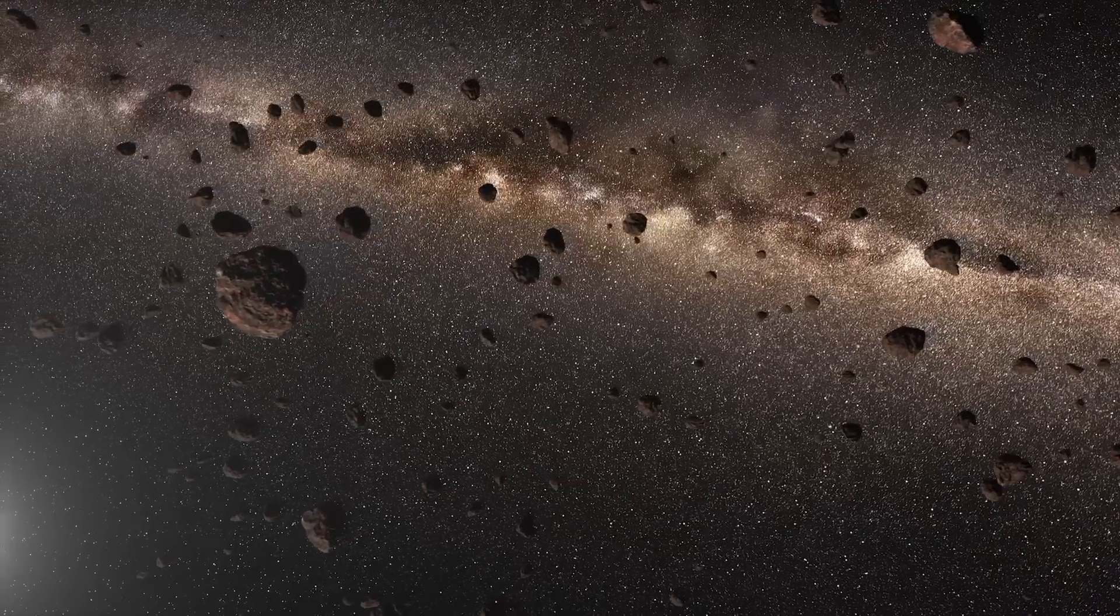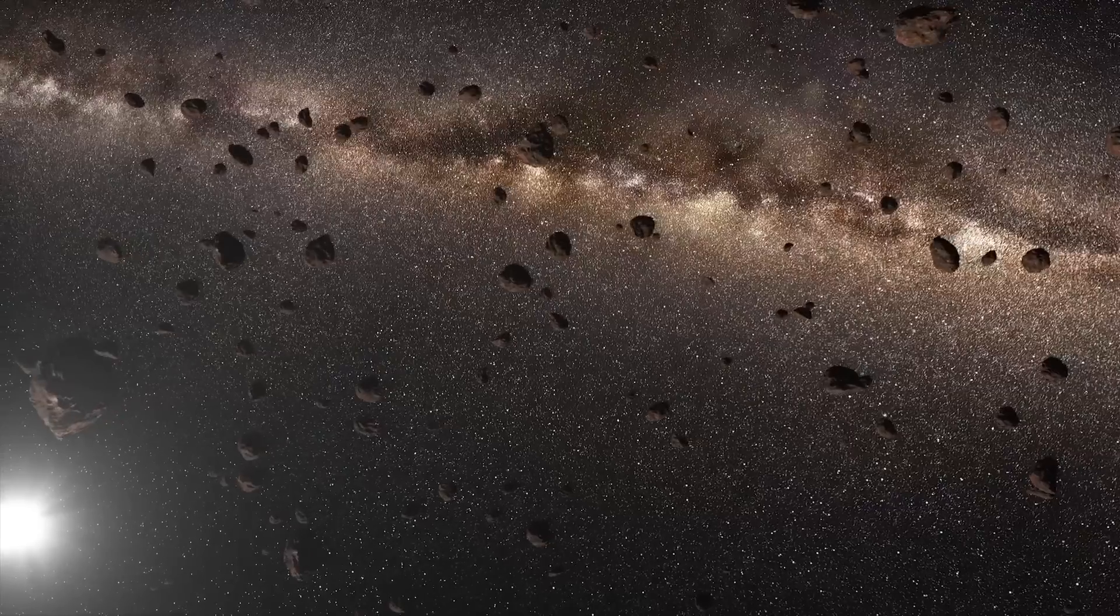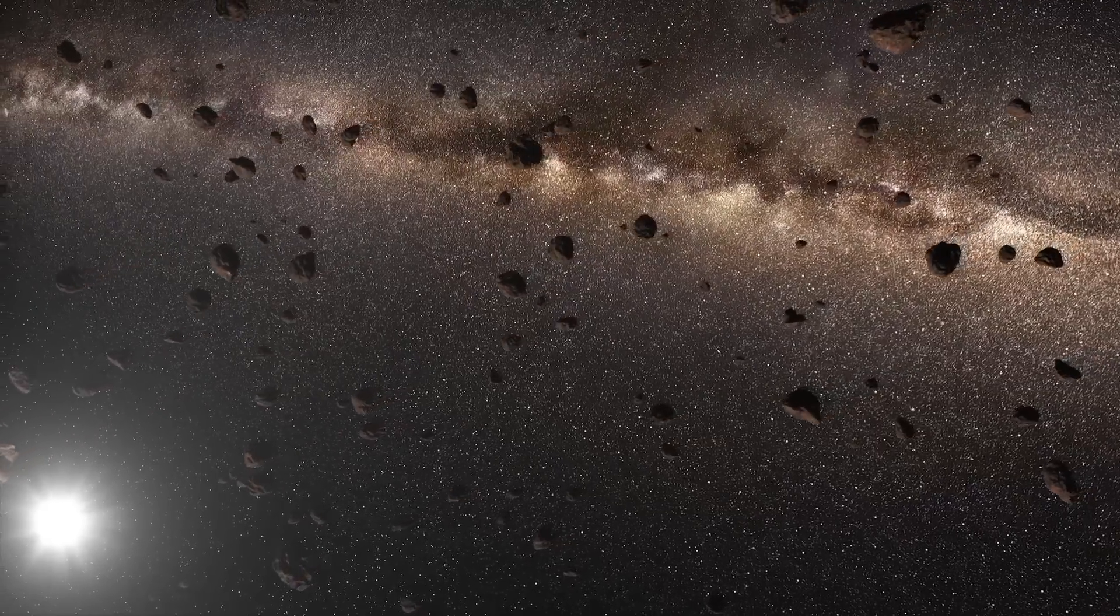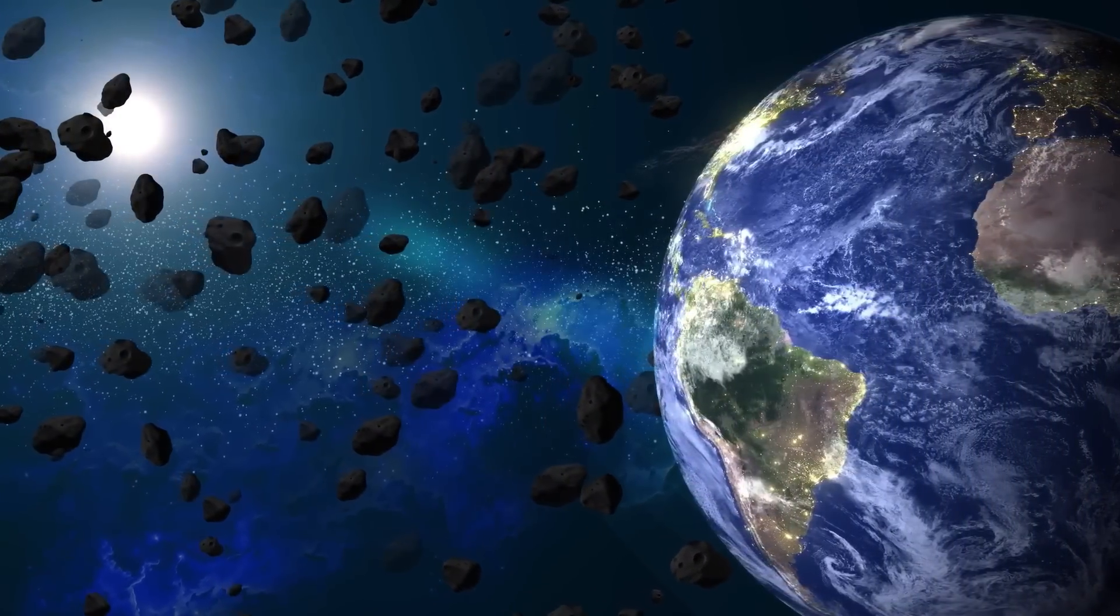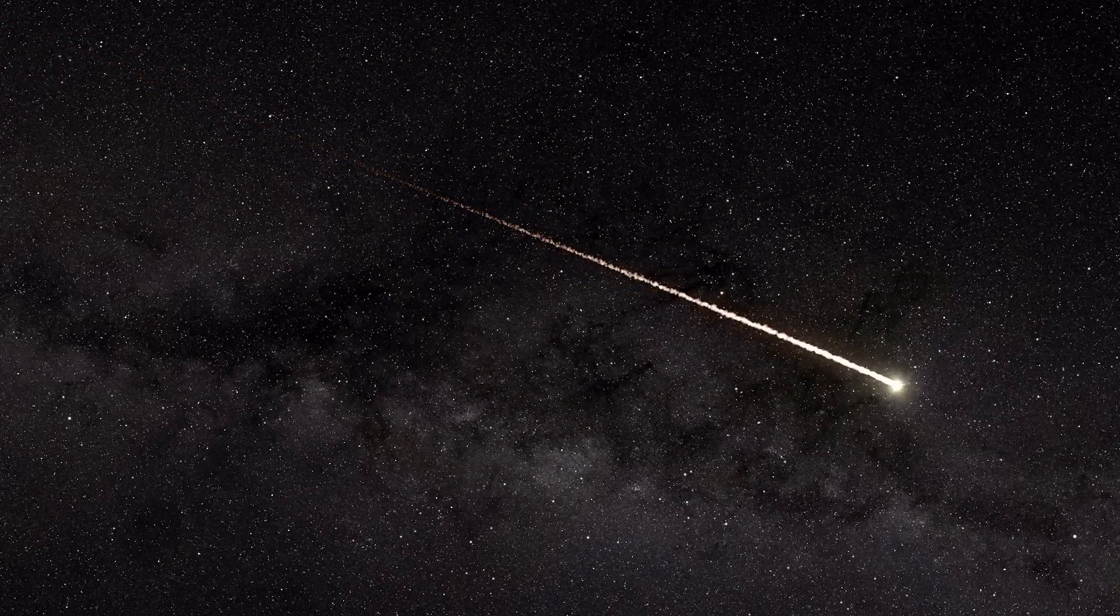However, the simulation shows that while particles from Alpha Centauri could plausibly reach our solar system, their size matters. According to the scientists, small particles, those that would appear as meteors in Earth's atmosphere, are unlikely to make it.